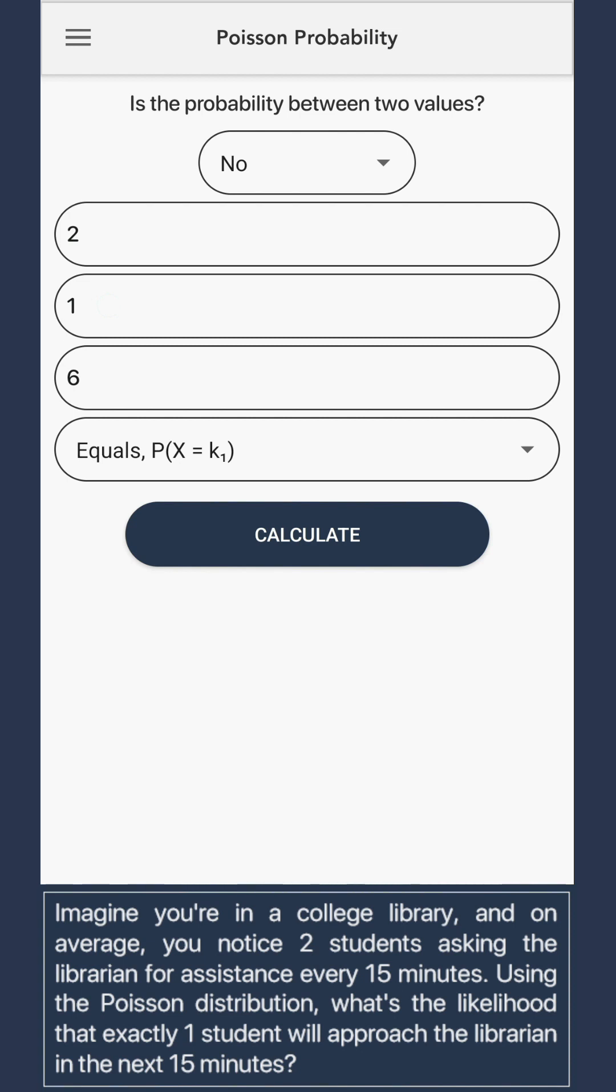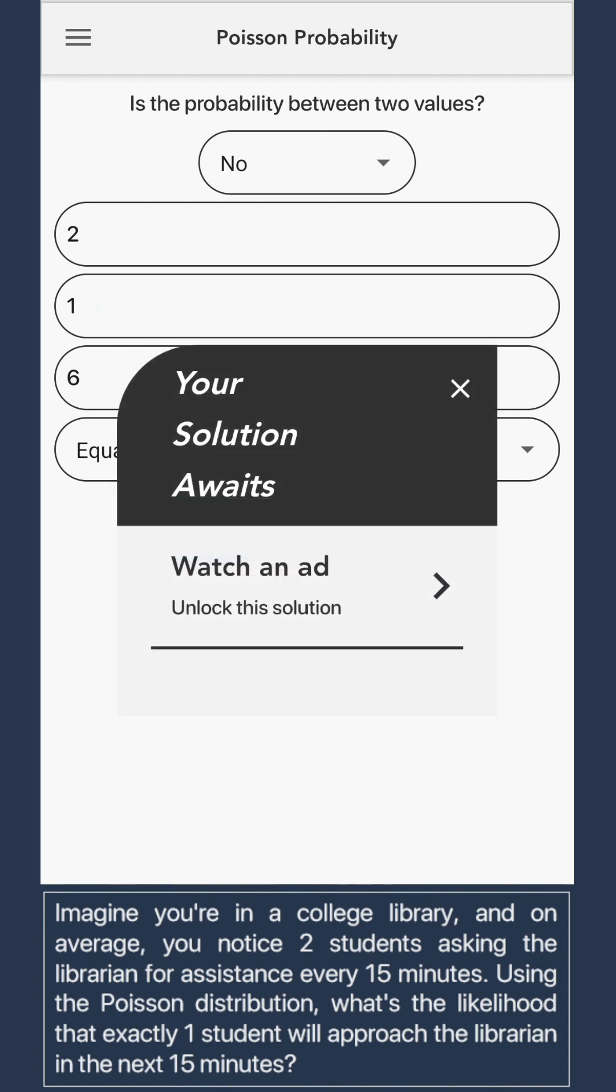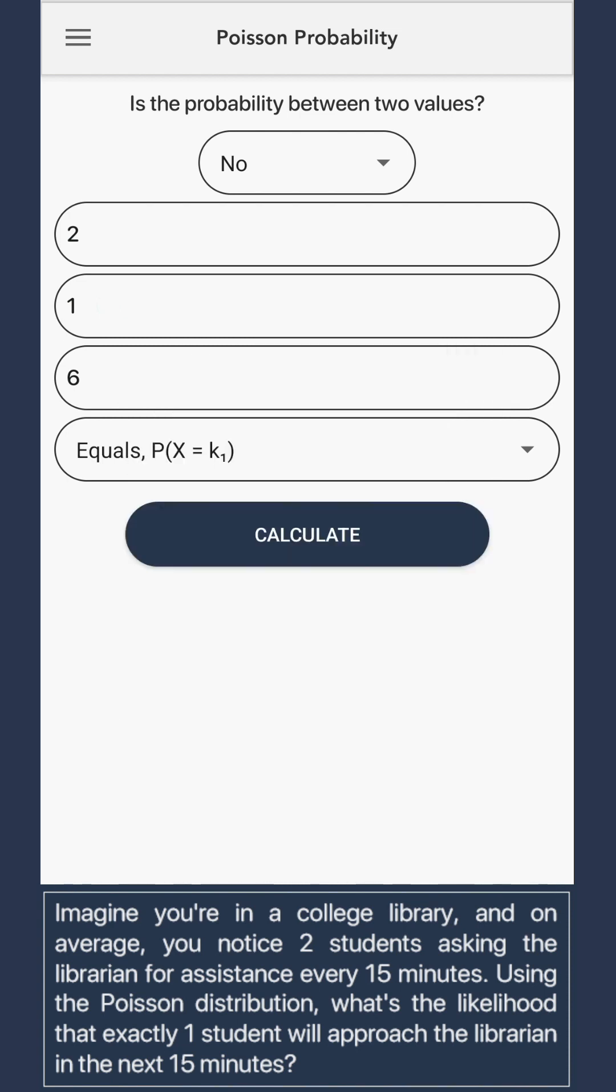Now, with everything set, we're ready to unleash the statistical wizardry and decode the likelihood of seeking help. Click Calculate, and watch an ad in exchange for the step-by-step solution.